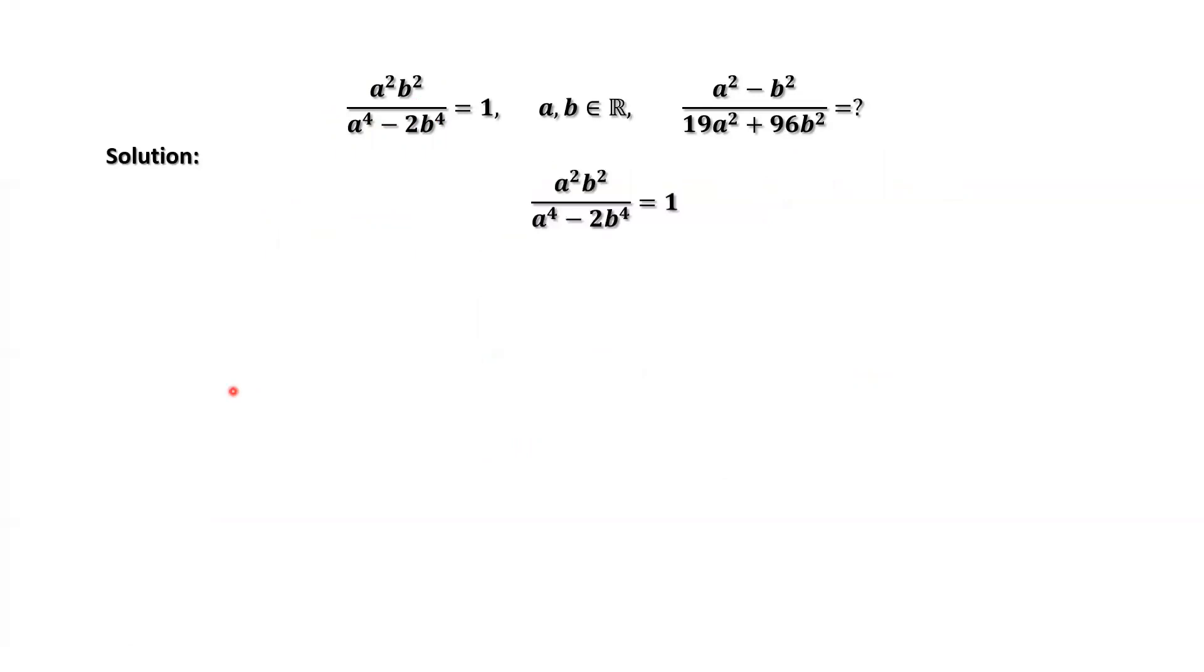This is the given condition. From this given condition, we have the following result: a cannot be zero, b cannot be zero. It's easy to check.